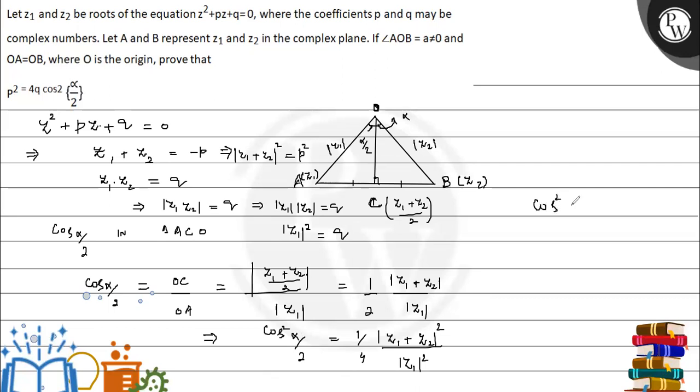Now we can see cos²(α/2) becomes (1/4) |z1 + z2|², that is p², upon |z1|², that is q only. Now this is p² = 4q cos²(α/2).